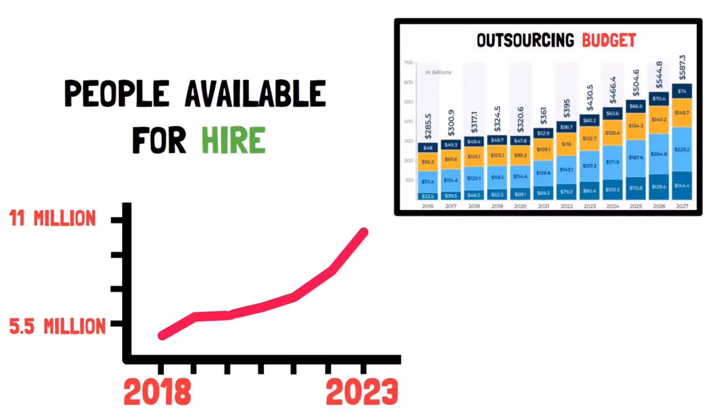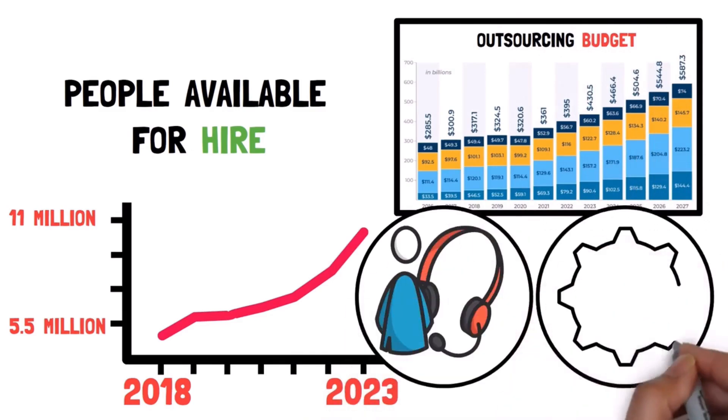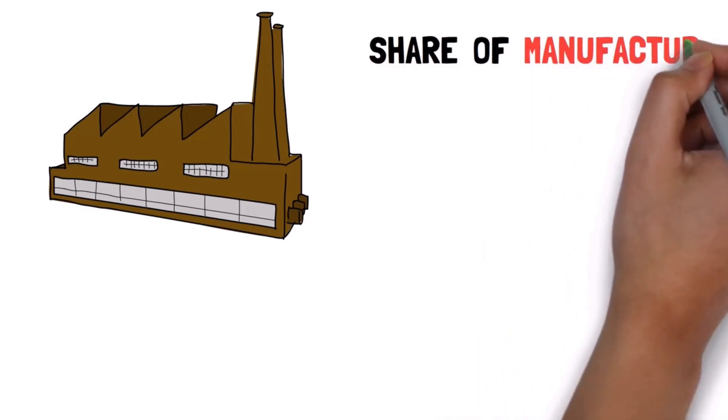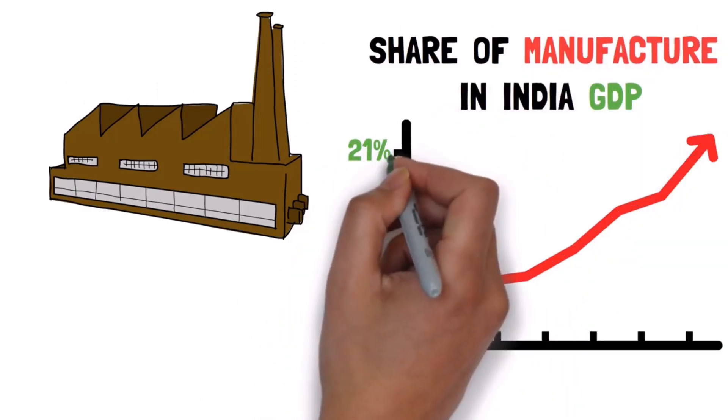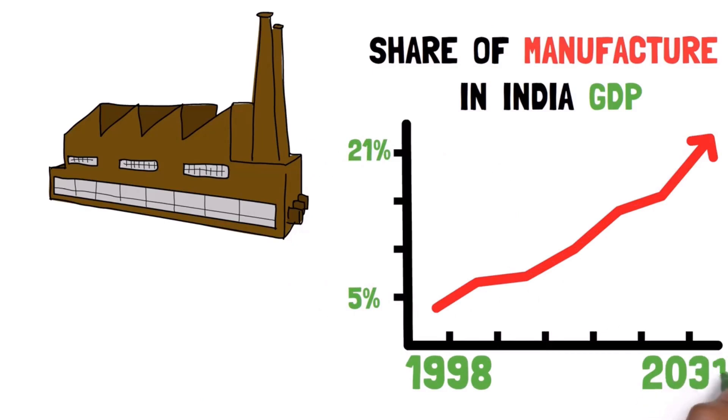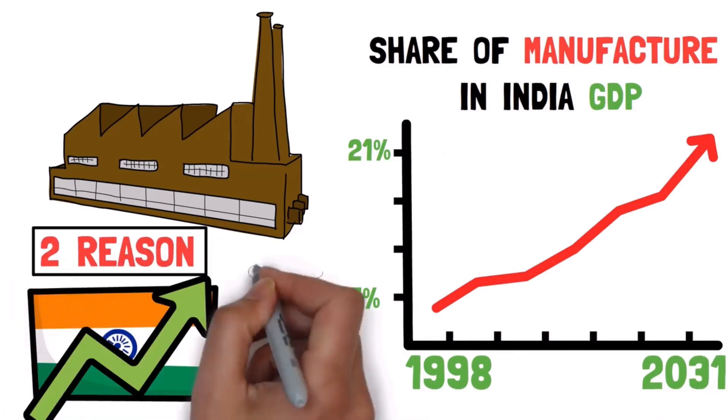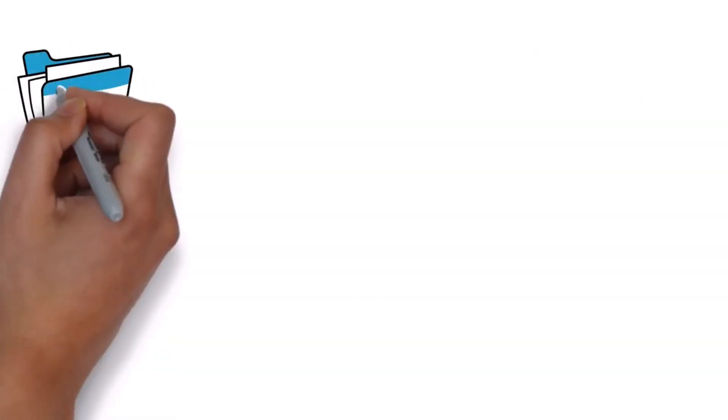But it's not just customer service and software development. They're also building factories, which is why India's manufacturing is set to increase to 21% of their GDP by the year 2031. Now, the second reason why India is set to crush this next decade is going to blow your mind. It's because of their digital transformation.